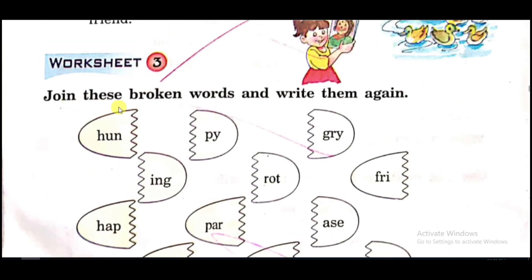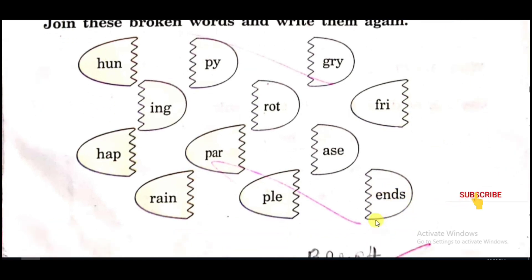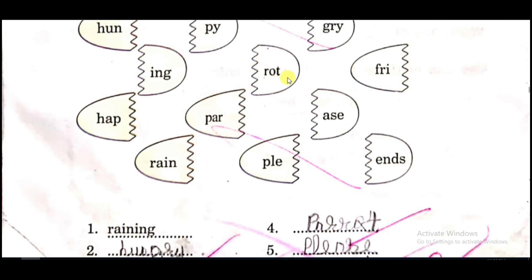Worksheet three: Join the broken words and write them again. Some broken words are given; join them to make a meaningful word. For example: h-u-n-g-r-y joined together makes 'hungry'; h-a-p-p-y makes 'happy'; r-a-i-n-i-n-g makes 'raining'. Next: par + rot makes 'parrot'. And here we have 'friends' and 'please'.